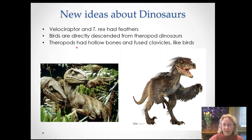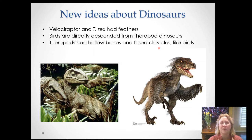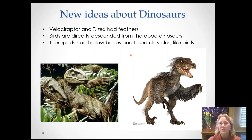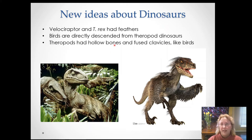Other interesting traits that theropods share with birds include hollow bones and fused clavicles. The clavicle is your collarbone — you can find yours at those two little bumps at the front of your throat. We can move ours independently, but for birds and theropod dinosaurs, the clavicles are fused into a single piece that can't move. That's the wishbone we pull out of the turkey — their fused collarbone. So theropods and birds share this unusual derived trait.